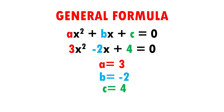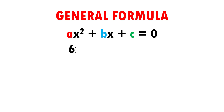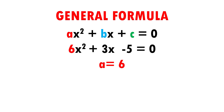Let's see another example. Here I have 6x squared plus 3x minus 5 equals 0. The letter a is the number by the x squared, which is 6. The letter b equals 3 because it is the number by the x, and the letter c equals minus 5 because it is the number that stands alone. Don't forget to accompany each number with its sign.